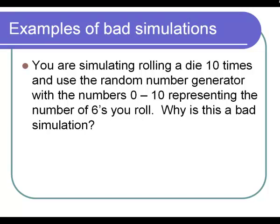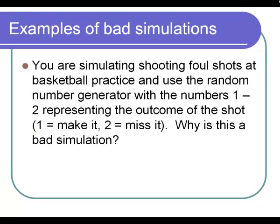To set up the simulation correctly, you want to generate numbers 1 to 6, and then comma 10, generate 10 numbers. Count up how many sixes you got and how many sixes you got out of the 10 numbers would represent your outcome for that trial. So 1, 6, 10 would be how you'd set that up.